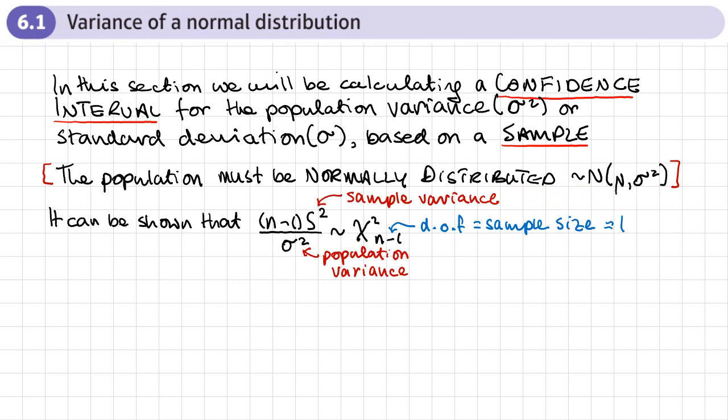It can be shown that if we do (n-1) times our sample variance divided by our population variance, then it's a chi-square distribution with n-1 degrees of freedom.